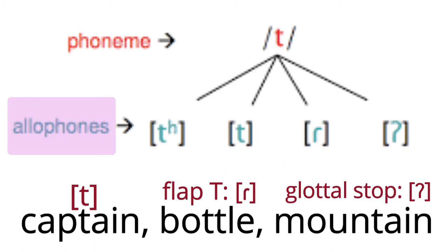So, for example, some allophones of the phoneme t are the flap t and the glottal stop. Most English phonemes have a few allophones. And if we don't use correct allophones, our speech will sound foreign or unrecognizable.